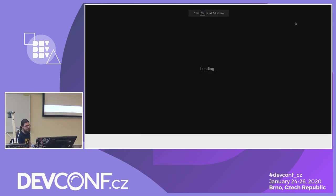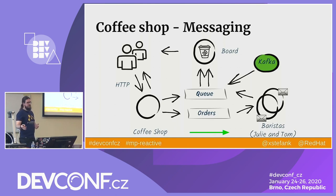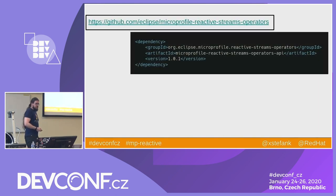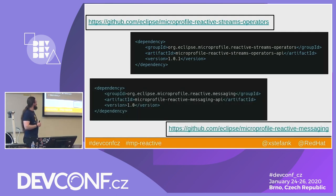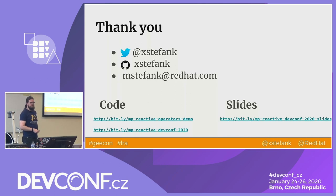So if you find this interesting, here are the dependencies for MicroProfile Reactive Stream Operators, currently in version 1.0.1, and MicroProfile Reactive Messaging — this is only the API. MicroProfile itself produces spec APIs, so if you want to use this somewhere, SmallRye Reactive Messaging and Reactive Operators are the available implementations. That should be everything — thank you for your attention, I hope you liked what you saw, and if there are any questions I can take them now.